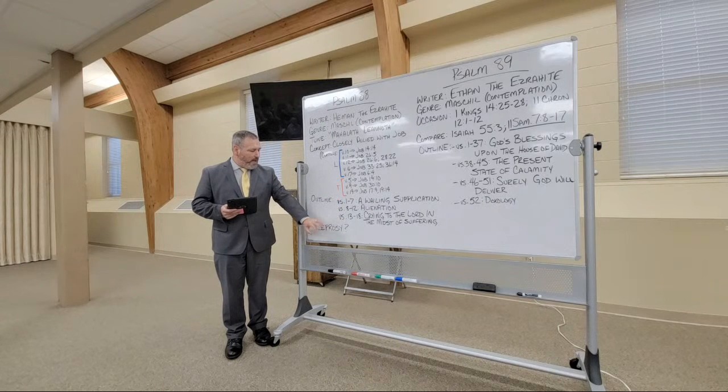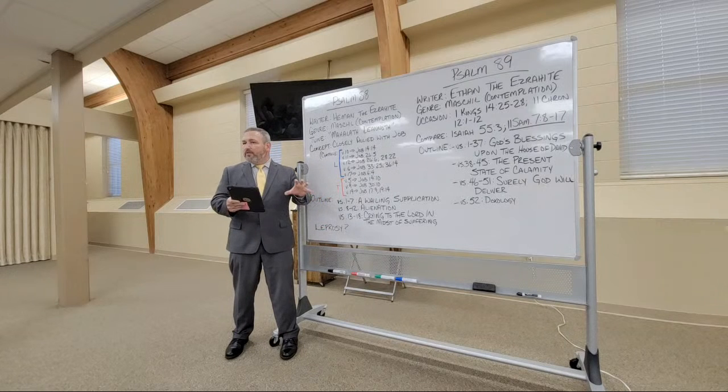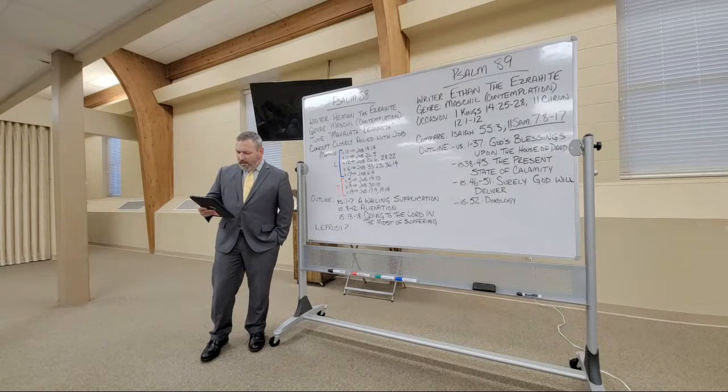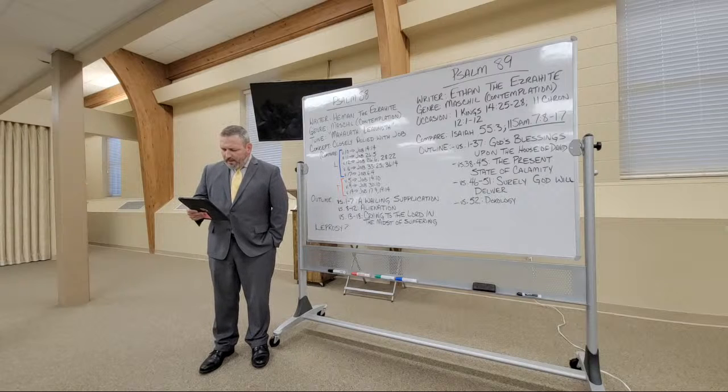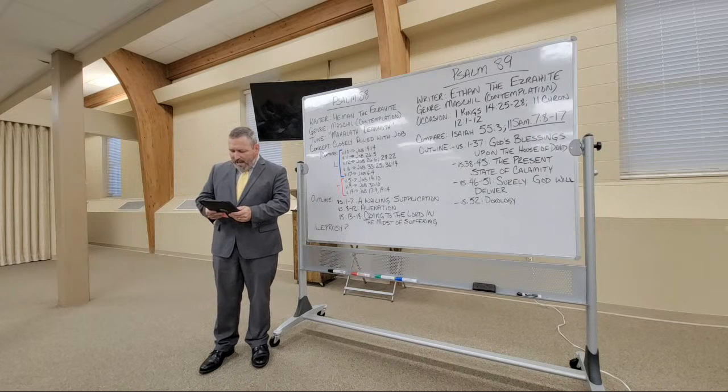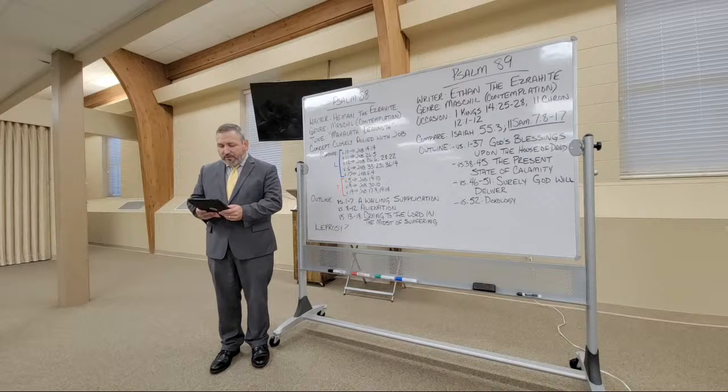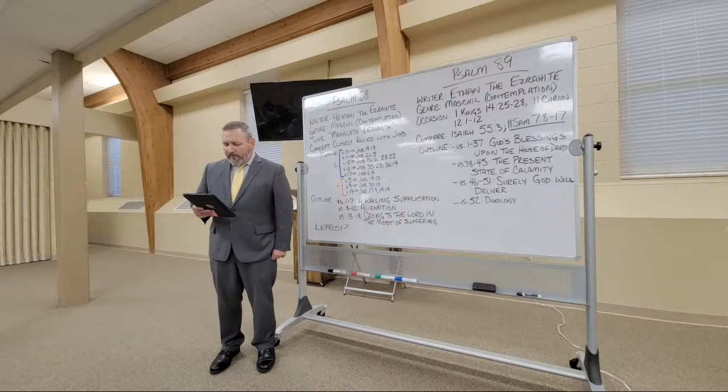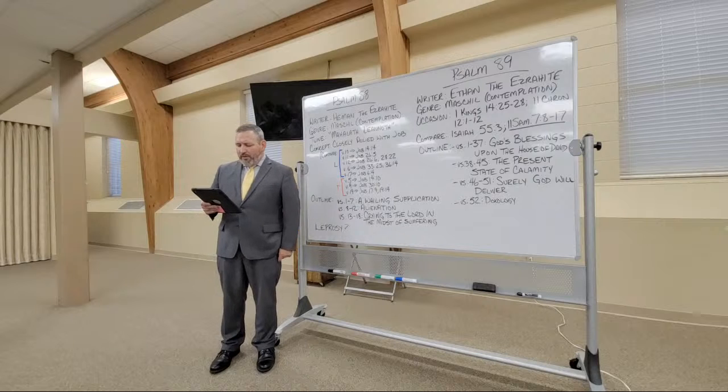Now, if we break it down in terms of an outline or structure, the first seven verses, and then verses 8 through 12, and then verses 13 through 18 kind of group the Psalm into three major divisions. In the first seven verses, we have what we might call a wailing supplication. A prayer to God. Listen to what he says here. O Lord God of my salvation, I have cried out day and night before you. Let my prayer come before you. Incline your ear to my cry. For my soul is full of troubles, and my life draws near to the grave. I am counted with those who go down to the pit. I am like a man who has no strength, adrift among the dead, like the slain who lie in the grave, whom you remember no more, and who are cut off from your hand. You have laid me in the lowest pit, in darkness in the depths. Your wrath lies heavy upon me, and you have afflicted me with all your waves.